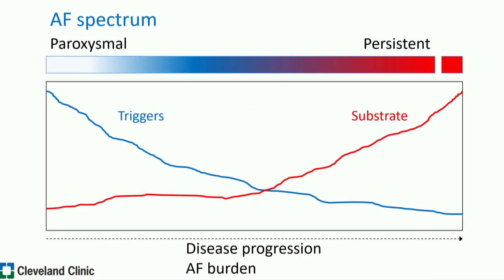This is how we traditionally looked at AFib — as paroxysmal and persistent — but keep in mind that these are based on random cutoffs for definitions. AFib is truly a continuum of illness, a progressive disease in nature. It changes over time from an intermittent form to a more persistent form. For the purpose of this talk, I'm going to use the terminology of less aggressive or more aggressive AFib, less advanced or more advanced AFib, because that better describes a continuous process than random categorical cutoff points.